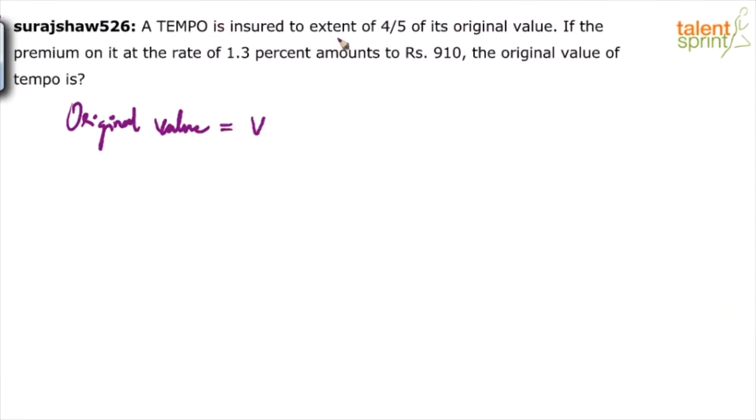Now the tempo is insured to what extent? Only four-fifths of its original value. That means the insurance company would pay only four-fifths of the value if, let's say, the tempo meets with an accident or it is completely damaged. So insurance is for four-fifths of the value. So that is like 4V/5.